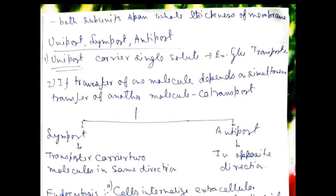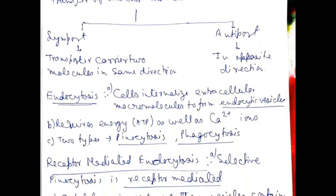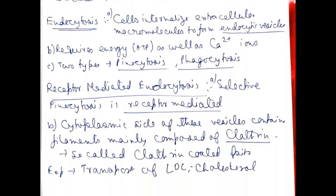Now, uniport, symport, and antiport. A uniport carries a single solute — an example is glucose transporters. If transfer of one molecule depends on simultaneous transfer of another molecule, it is a co-transporter. Co-transporters may be symport or antiport. In symport, both molecules are carried in the same direction. In antiport, two molecules are carried in opposite directions — an example is the sodium pump.